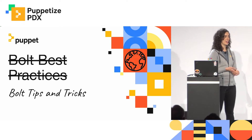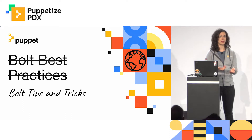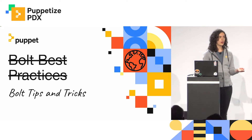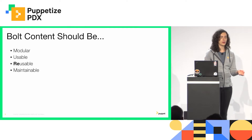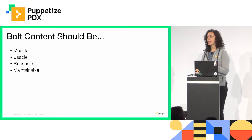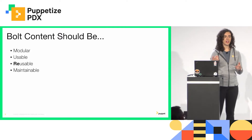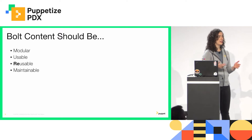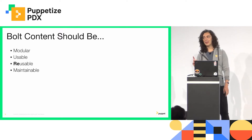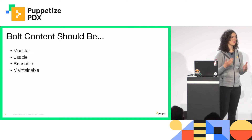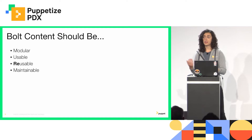The first question to ask is: what makes something a best practice? There are four pillars we want to drive your Bolt content towards. First, making sure your content is modular — writing tasks and plans that do one thing and do it well, then composing those into more meaningful workflows. Second, making sure your content is usable, so that if someone comes across it, they can understand how to use it, hopefully without pinging you directly.